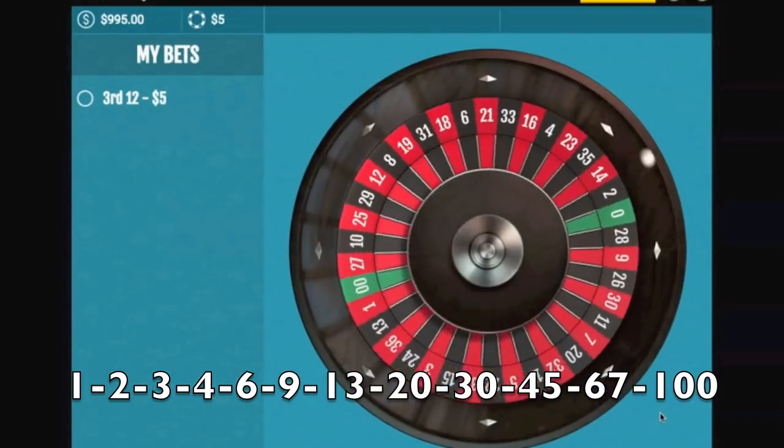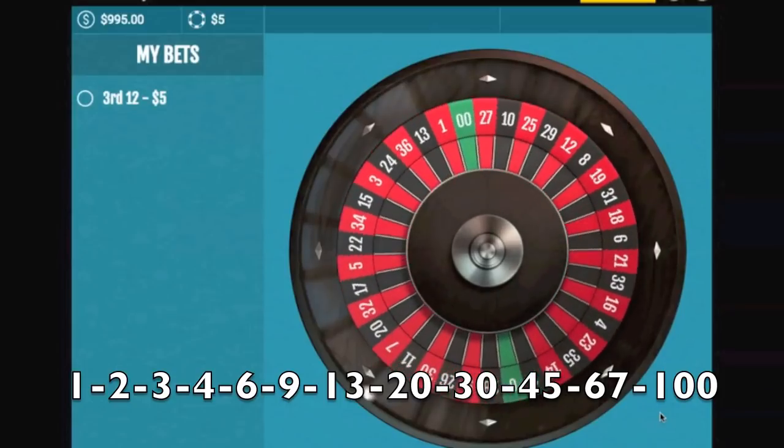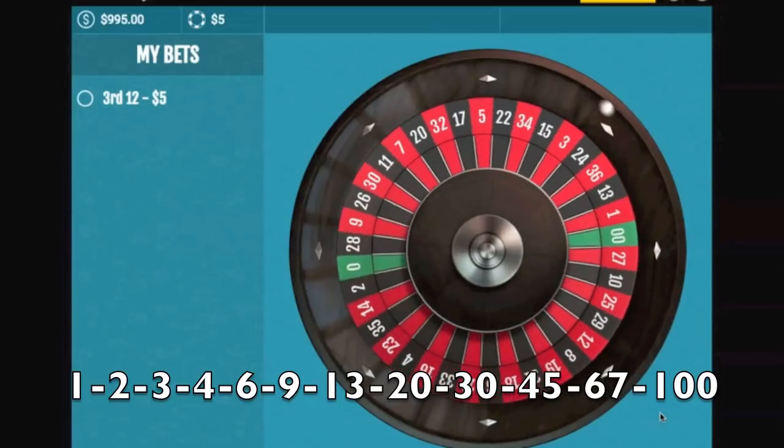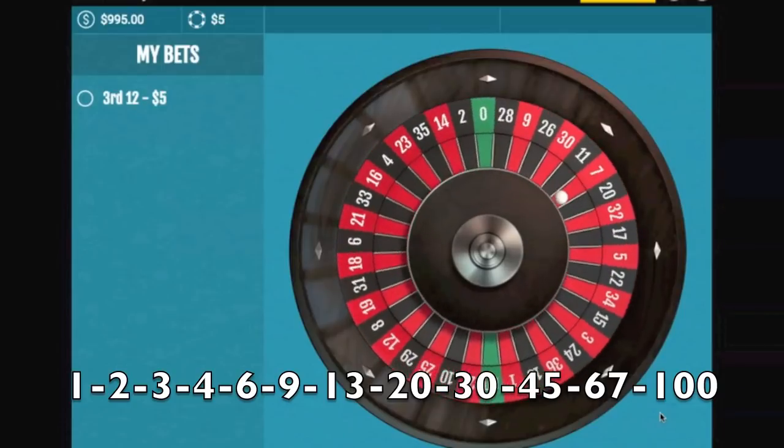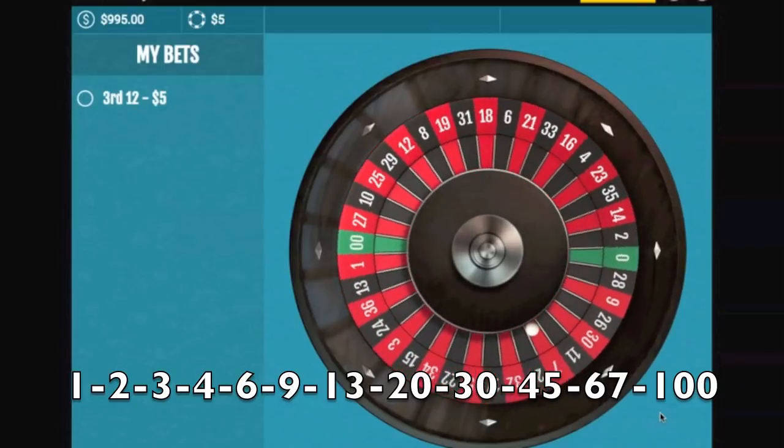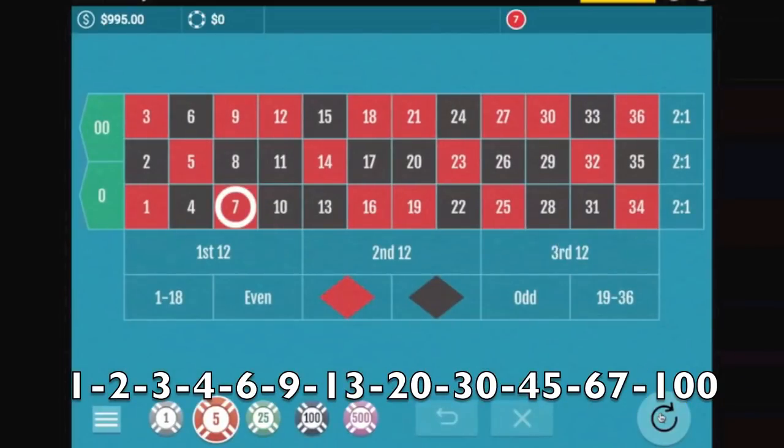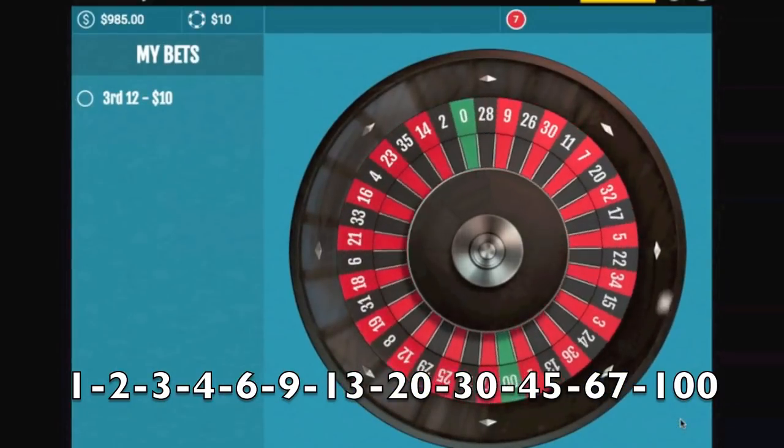So if we lose this one, which we do—seven—we're going to go by the next number in the sequence: two. So it's going to be a ten dollar bet. It's a ten dollar bet.